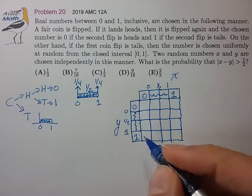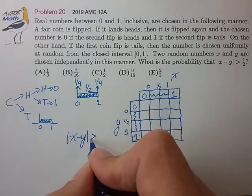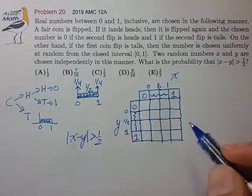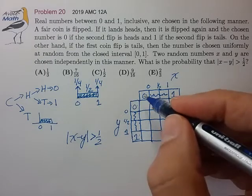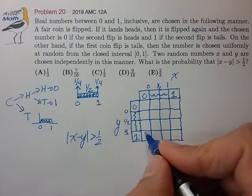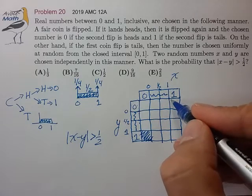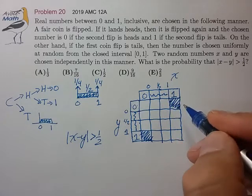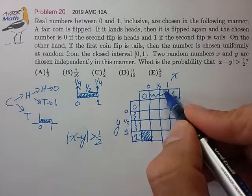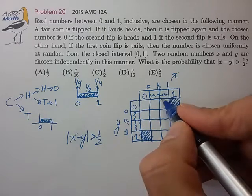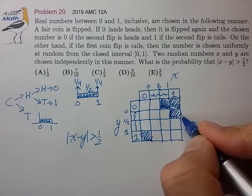We're looking for the condition that |x - y| is greater than 1/2. Let's work out the easy cases first. If y is 1 and x is 0, that's always going to be satisfied — let's shade that in. If x is 1 and y is 0, that's always going to be satisfied — let's shade that in. Likewise, if y is 0 and x is in its upper range of the uniform distribution, that will also satisfy the inequality, and we can fill in the other similar boxes.